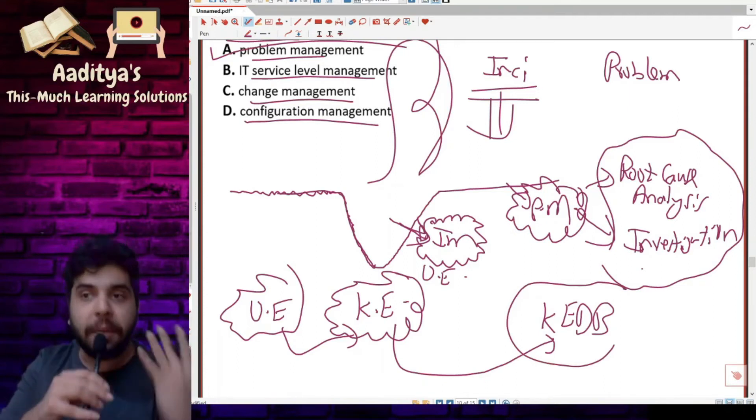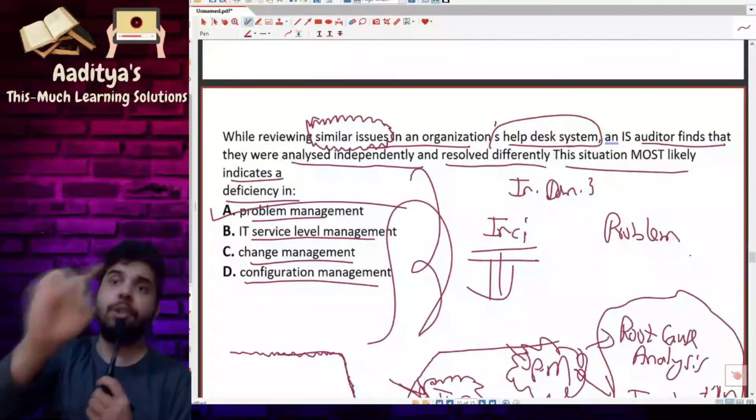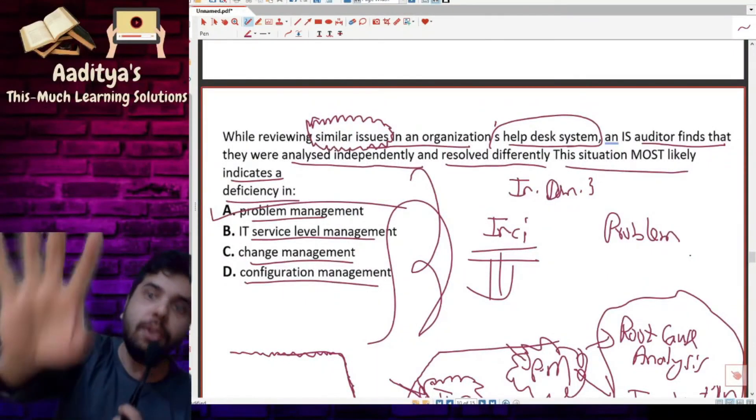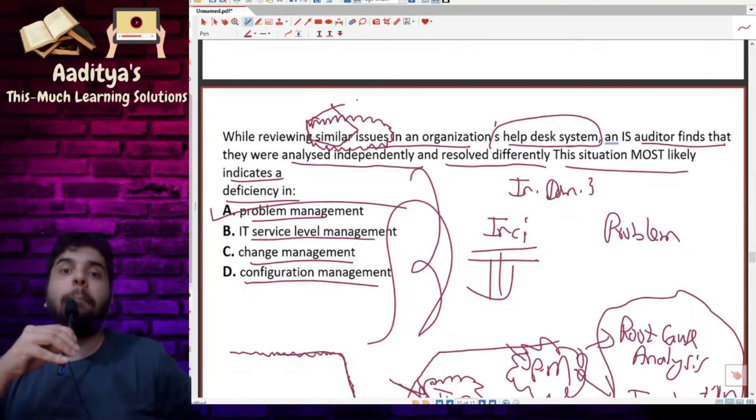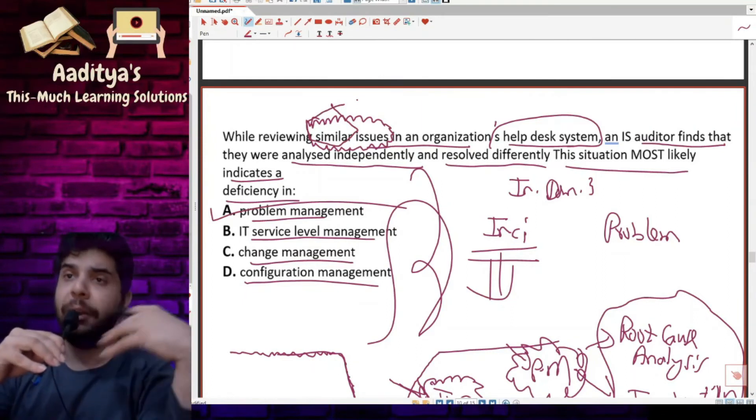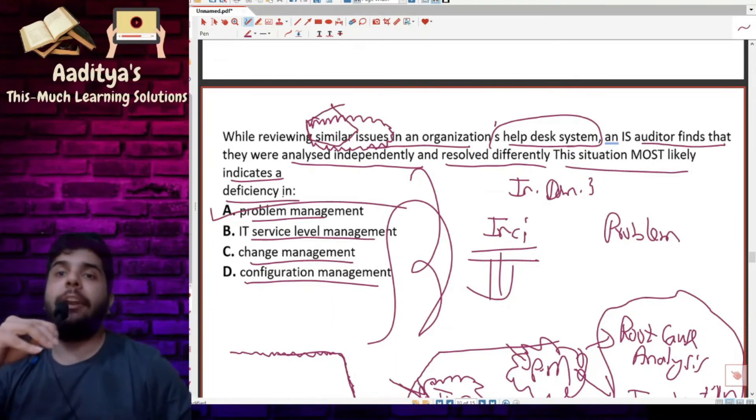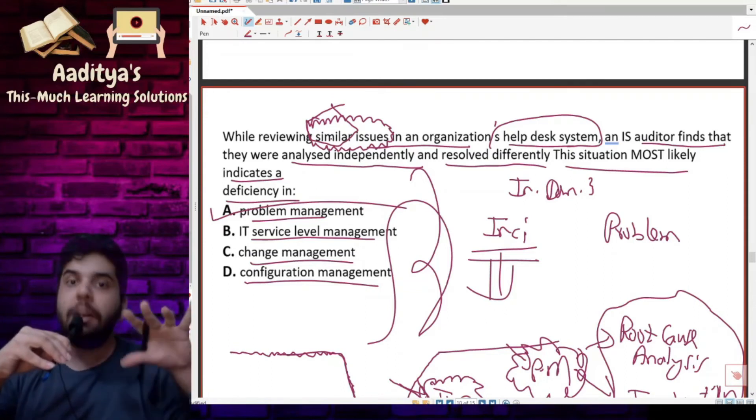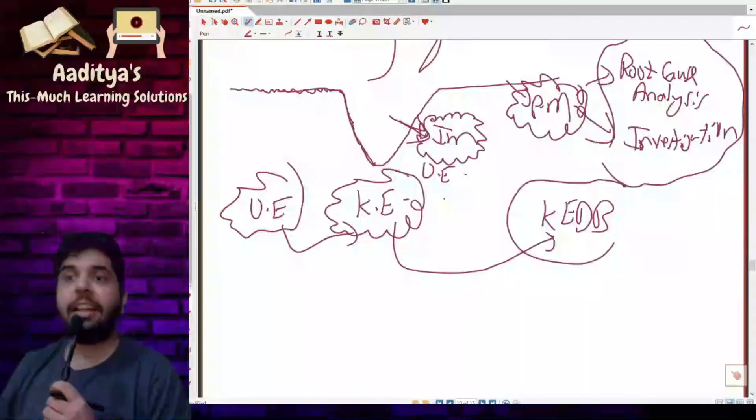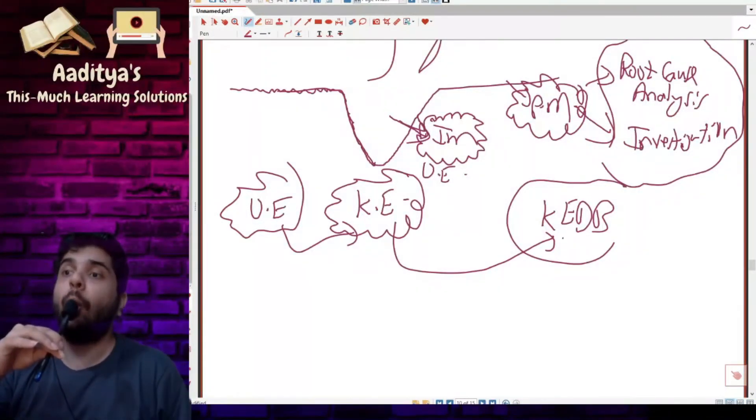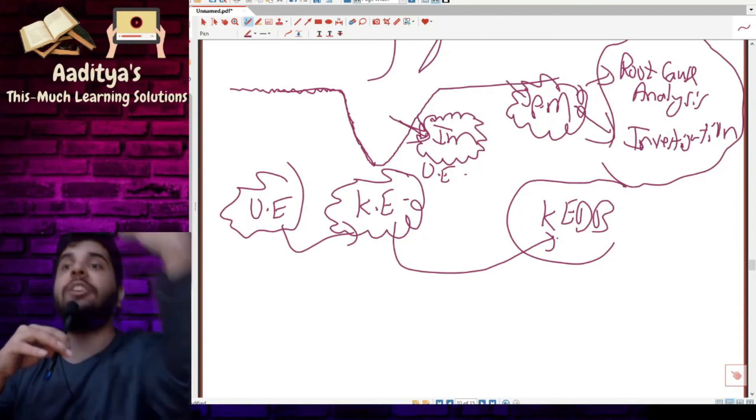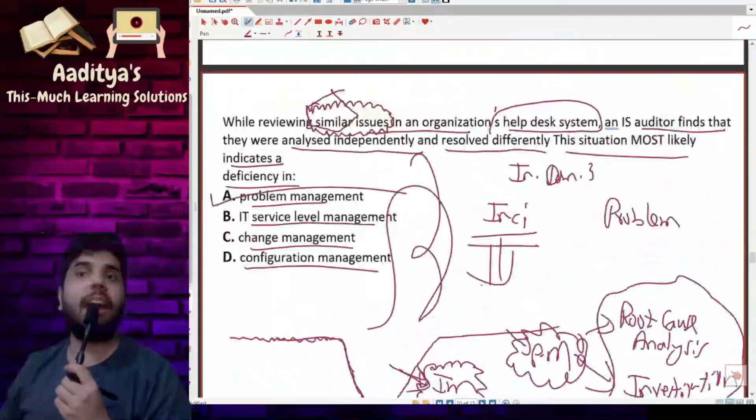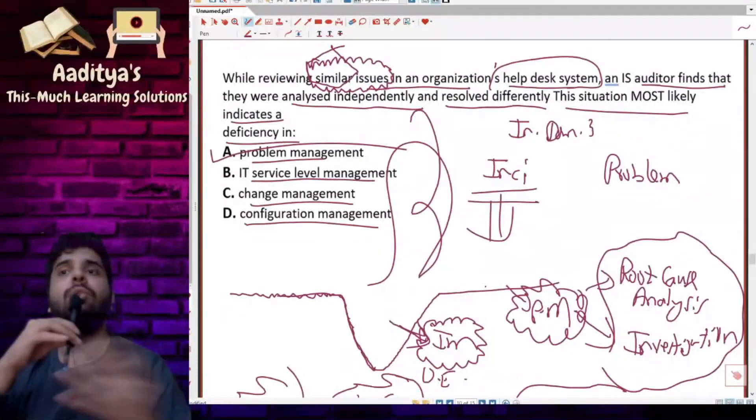But in this question, the first word itself is 'while reviewing similar issues.' That's the reason I always say each and every word is important. How well you read and interpret the question will help you identify the correct option. The first line says while reviewing similar issues, and we discussed that after problem management, we make known error database because we don't want the problem to repeat in the near future. But in this question, they are saying we are facing similar issues all the time.